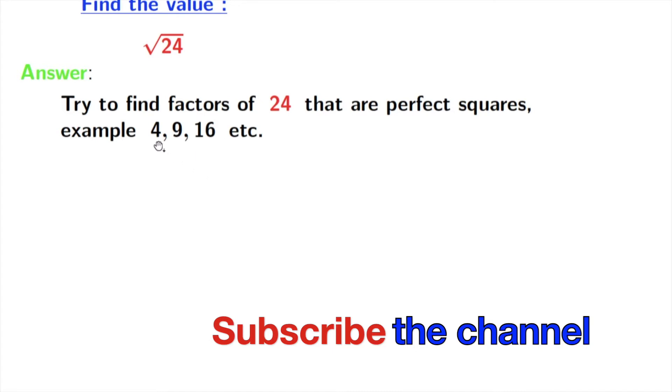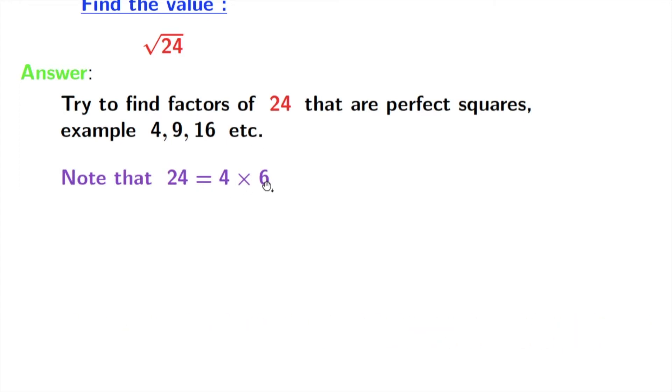So let's look at 24. We will write it as 4 times 6. Here look at 4. This is a factor of 24 and this is also a perfect square which is square of 2. So that's why we have taken this factor.